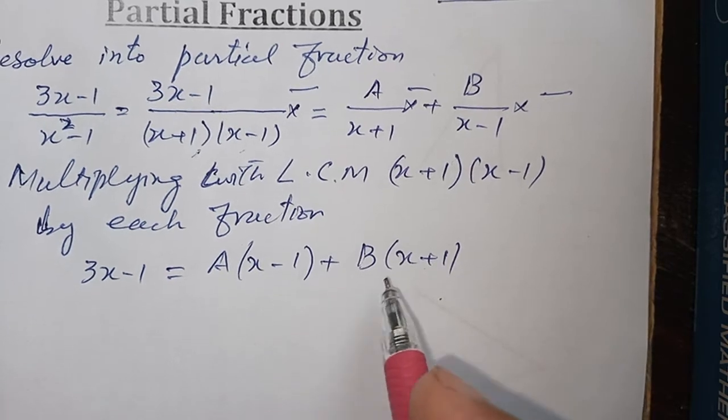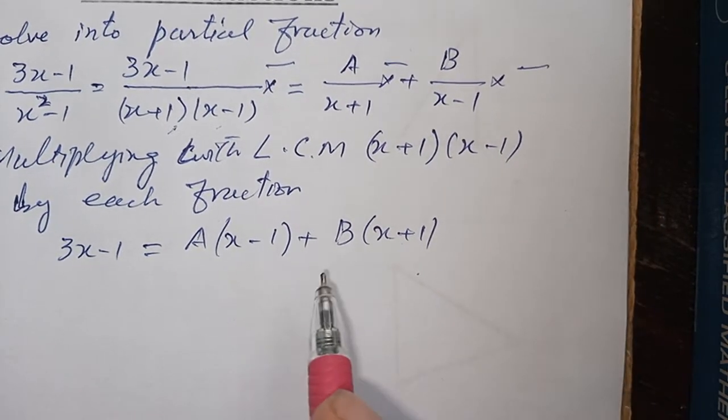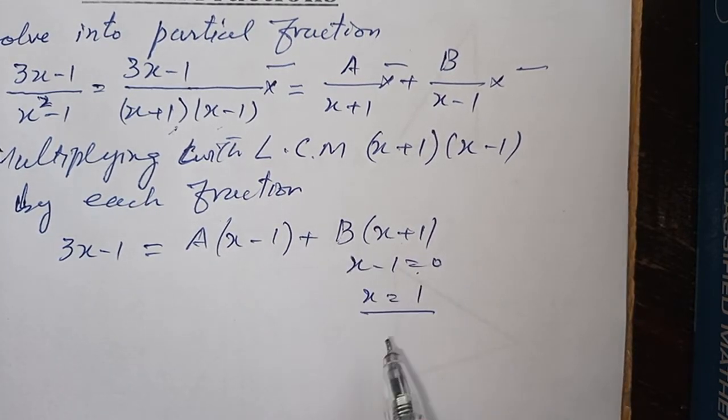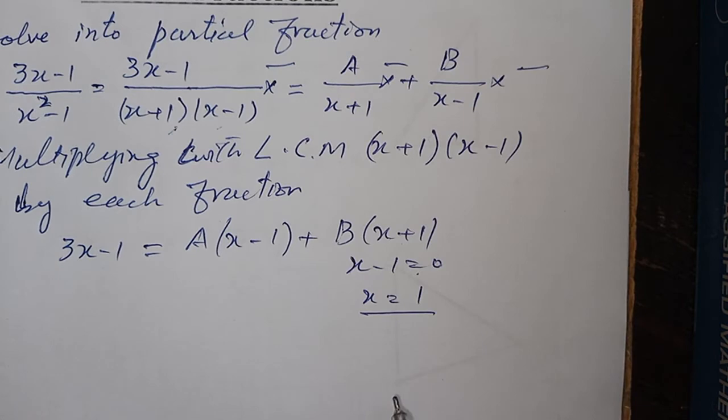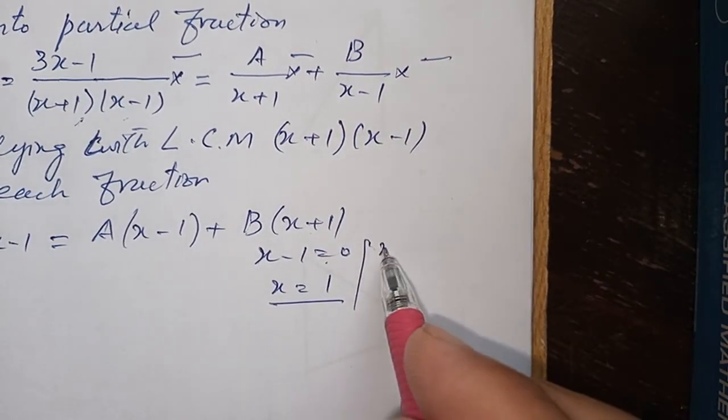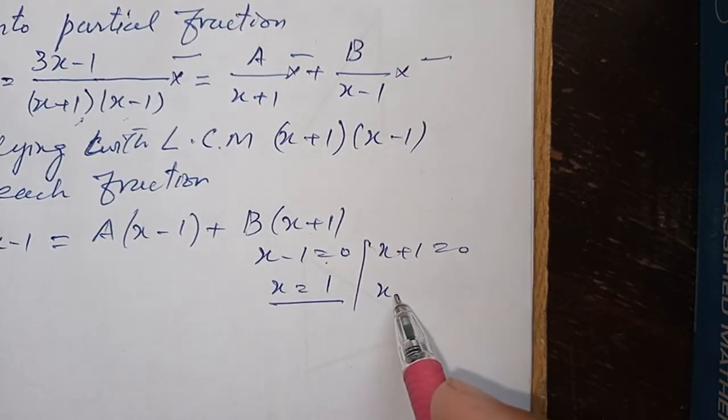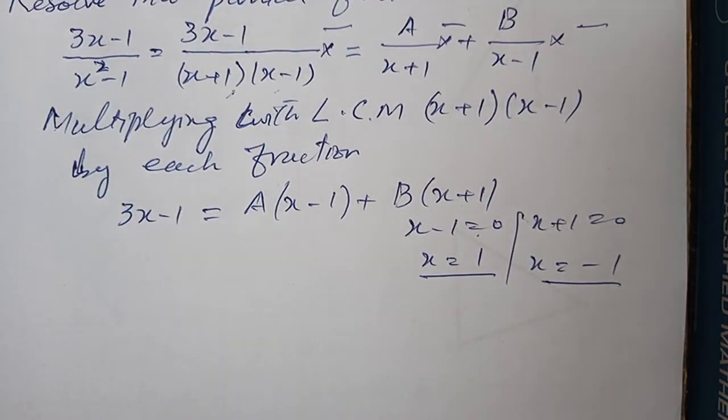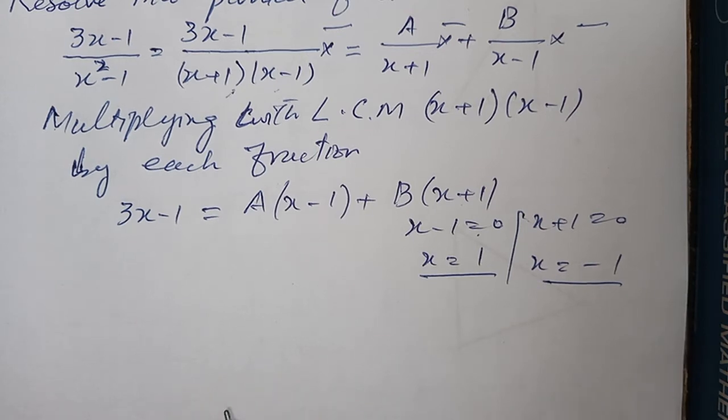अब यहां एक दफा इस पूरी question में आप x+1 is equal to 0, x is equal to 1, एक दफा x का value 1 plug करेंगे और दूसरी दफा x-1 is equal to 0, x is equal to minus 1 plug करेंगे. दो values plug करने से आपको A और B जो unknown elements हैं, इनका answer आपको मिल जाएगा. यह answer जब आपके दोनों का मिल जाए, इनकी values को plug करेंगे आप partial fraction में, answer दे सकते हैं.